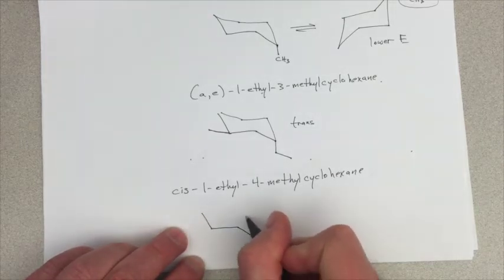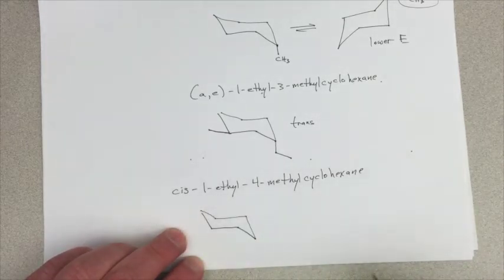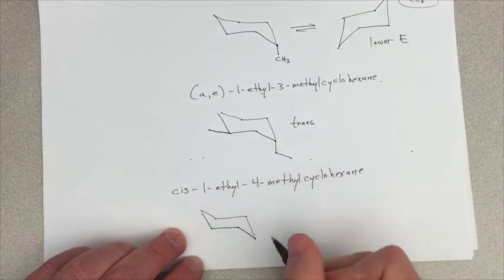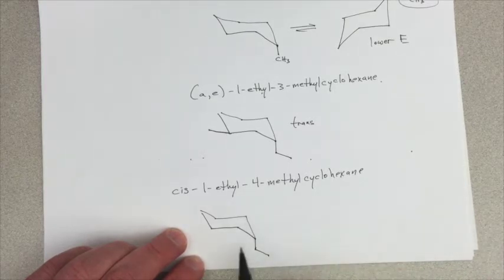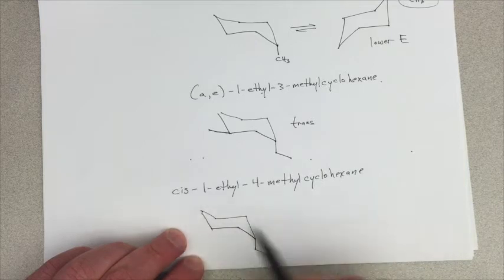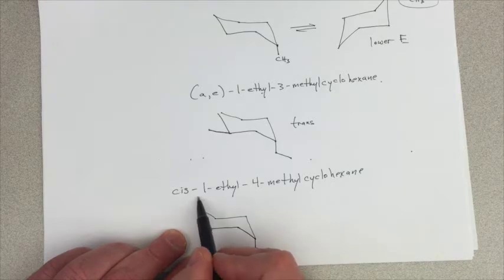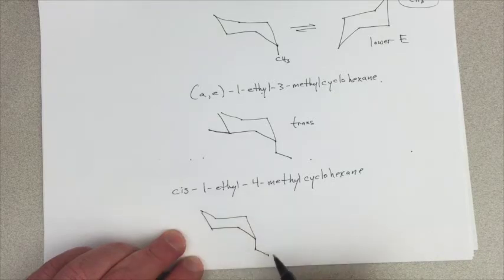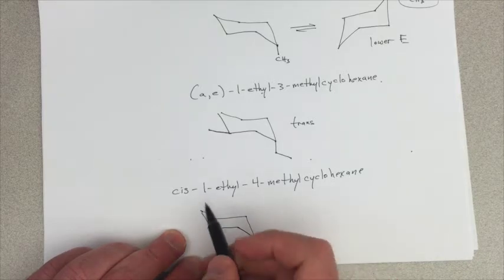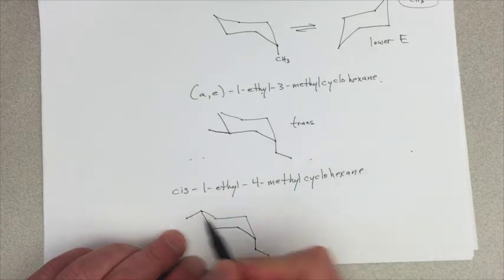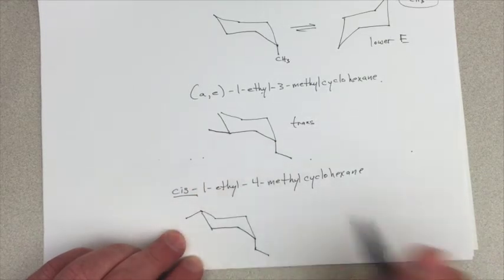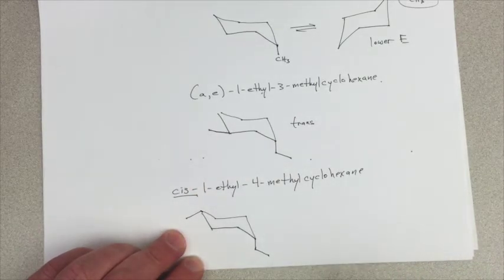So again, I just draw my cyclohexane chair. I'm going to put ethyl group in the one position. I don't care where. I'll just do it the same way I did last time. And then let's do 1, 2, 3, 4. I need to put a methyl group here. It needs to be cis. So I know here axial goes up. My ethyl went down, so that would be trans. So my methyl had better be equatorial down so that both of these are down, which would make it a cis molecule. This is one version of it.